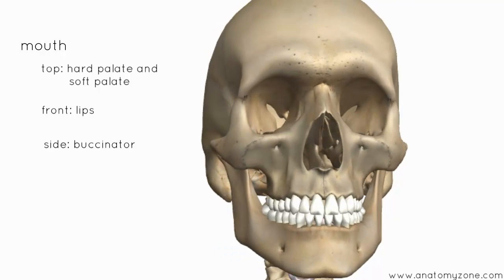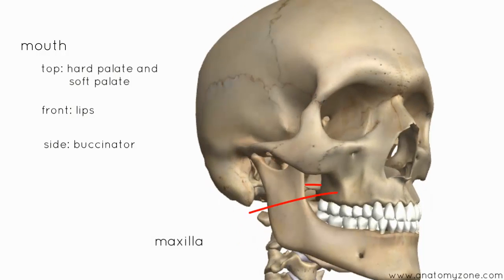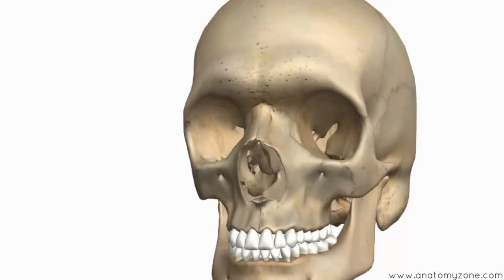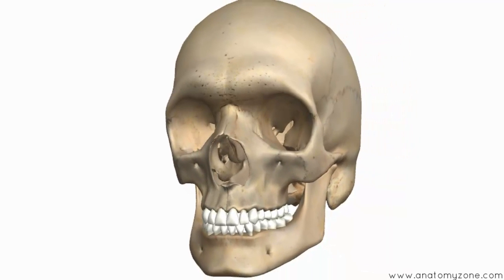On this model, the upper teeth sit in the maxilla — this bone of the skull — and the lower teeth sit in the mandible. The function of the mouth is to provide an opening for the food to enter the body, and it's used for mechanically digesting the food by chewing. You can see how the muscles of mastication bring about chewing movements, and it also begins chemical digestion.